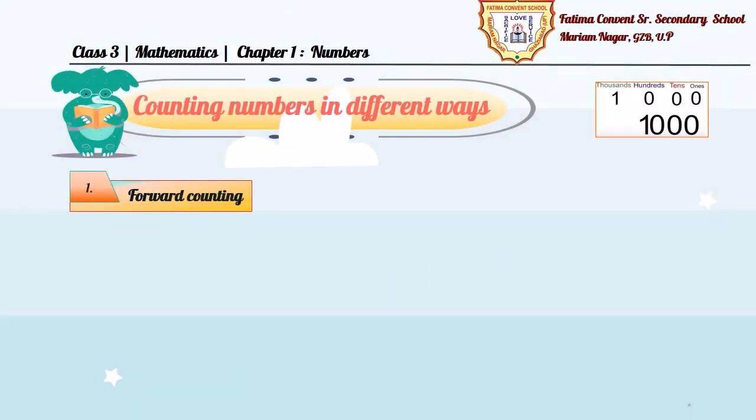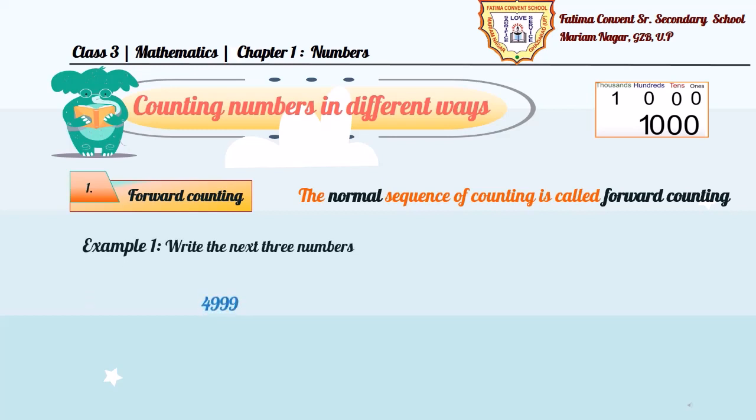Now, let's discuss the first way of counting numbers, that is forward counting. The normal sequence of counting is called forward counting. That means, we count the numbers as it is. Starting from 1, then we will count 1, 2, 3, 4, etc. If we start from 25, then it will continue forward counting as 25, 26, 27, 28, etc. So, let's see some examples related to forward counting.